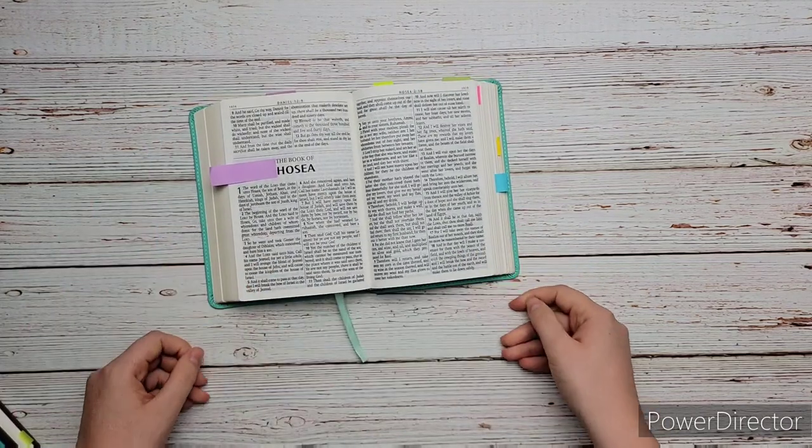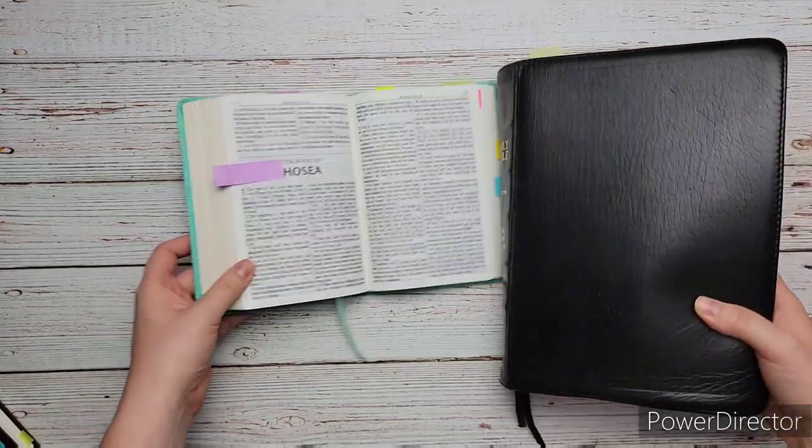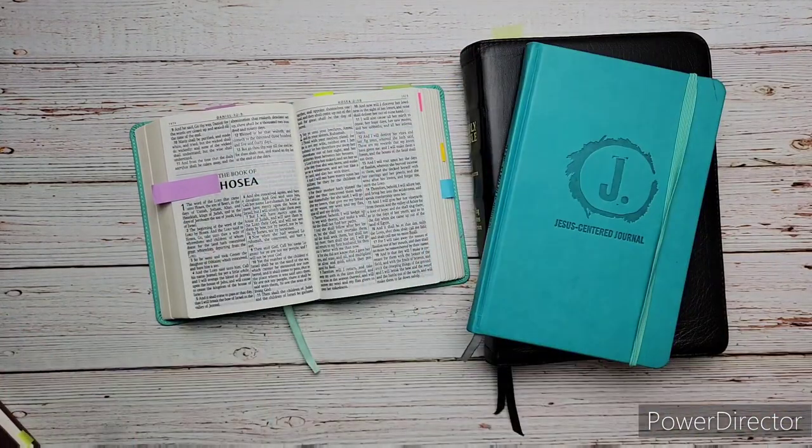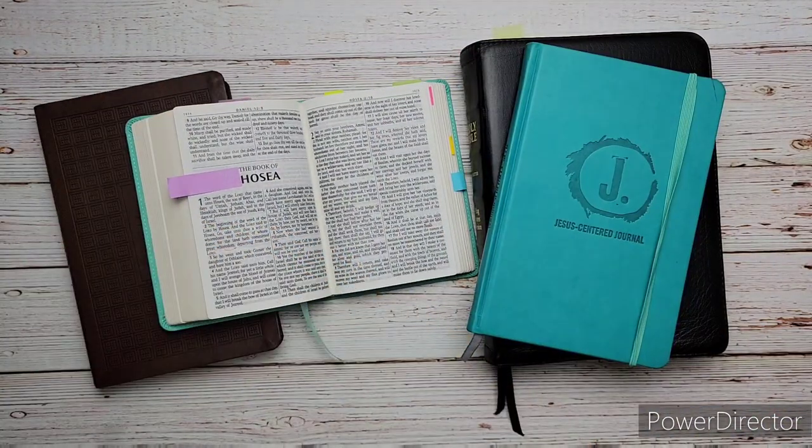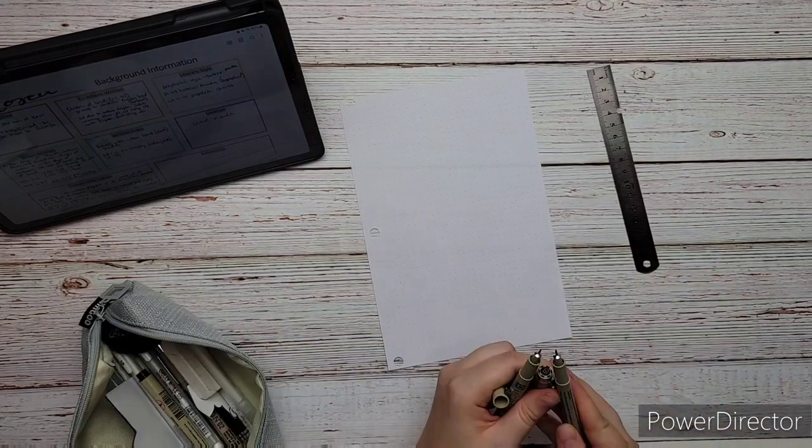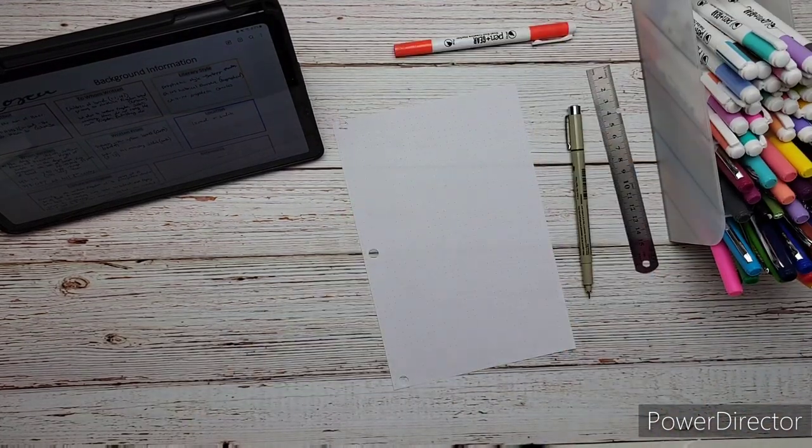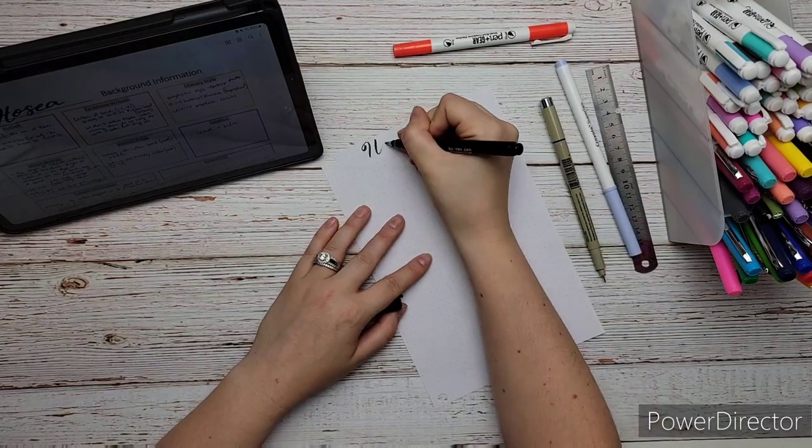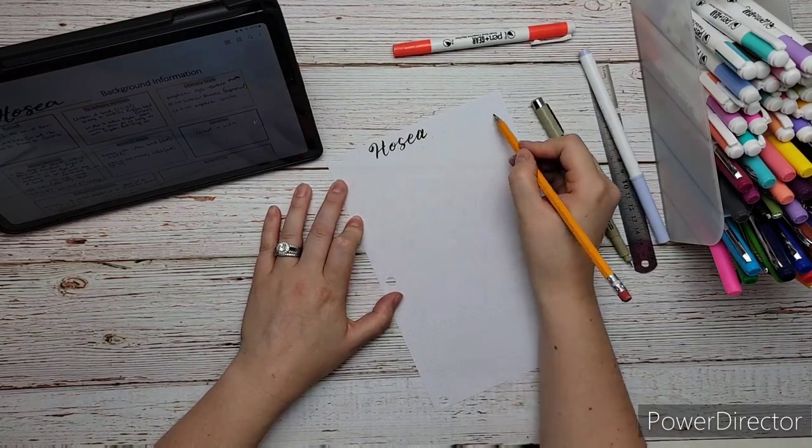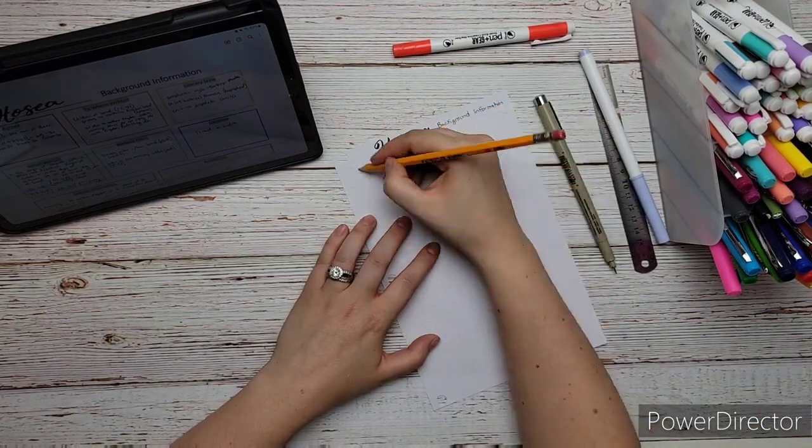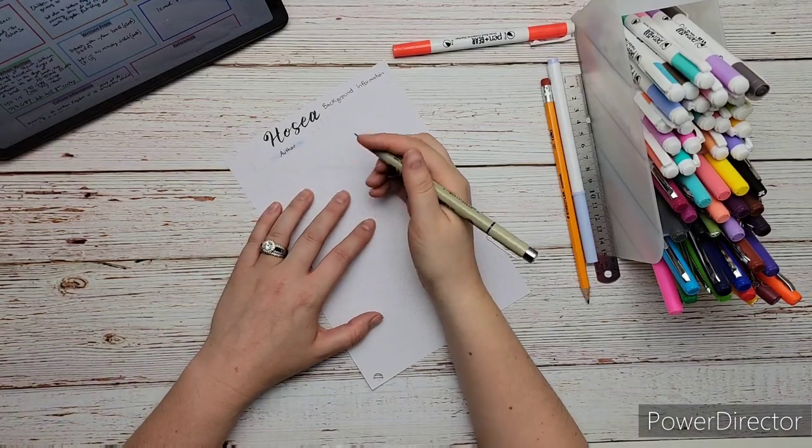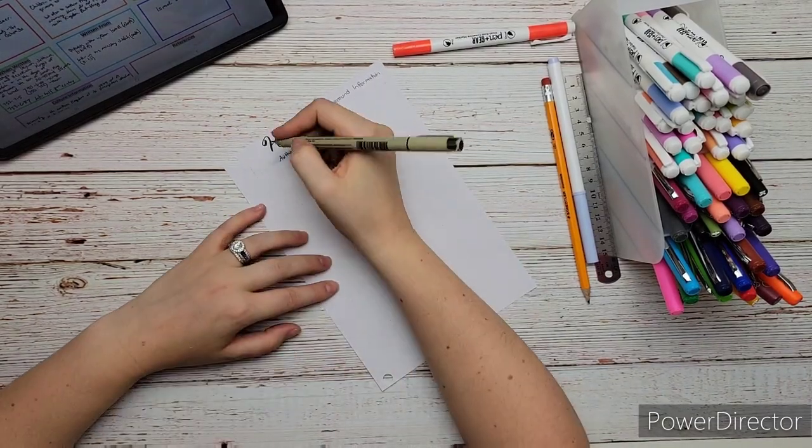So how I decided to really put everything into my journaling Bible is I decided to just cut down a dot grid sheet of paper to the size that fits inside my journaling Bible which is like six by nine I think six inches by nine inches and so I'm going to put all of the background information on this sheet and I'm going to tape it into my journaling Bible.